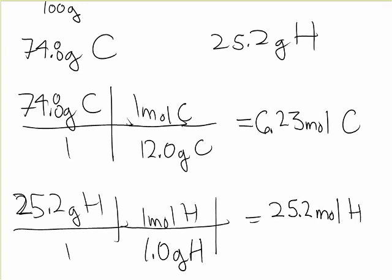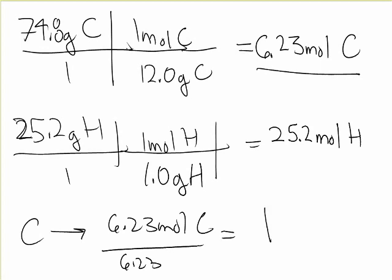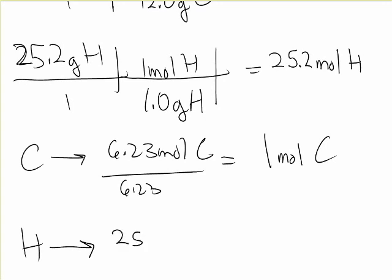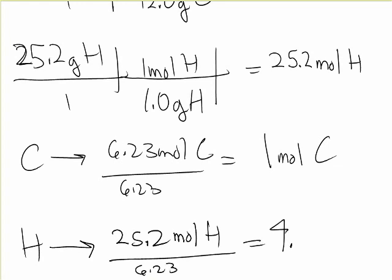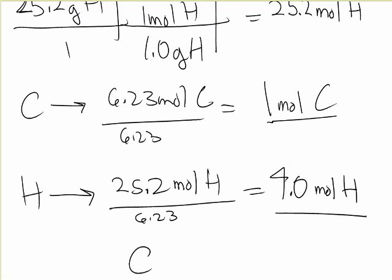Now let's take these and multiply it by the lowest ratio. So the lowest one will be carbon. So carbon that will equal 6.23 mole of carbon divided by 6.23. That equals of course 1 mole of carbon. And hydrogen. How many moles of hydrogen? That would be 25.2 mole of hydrogen divided by 6.23. That equals 4.0 mole of hydrogen. So our formula means it's just one carbon and four hydrogens. One carbon and four hydrogens. That's our empirical formula.